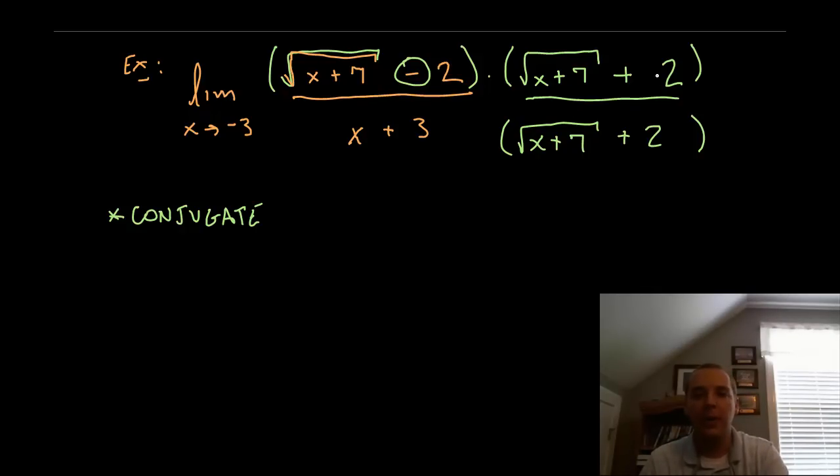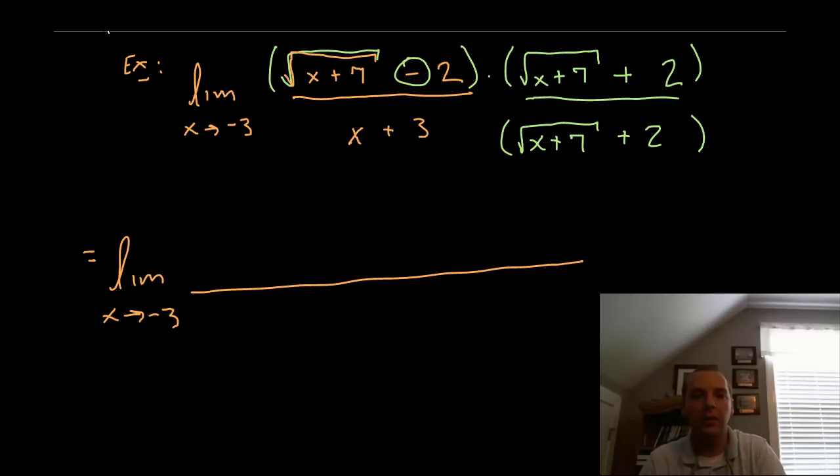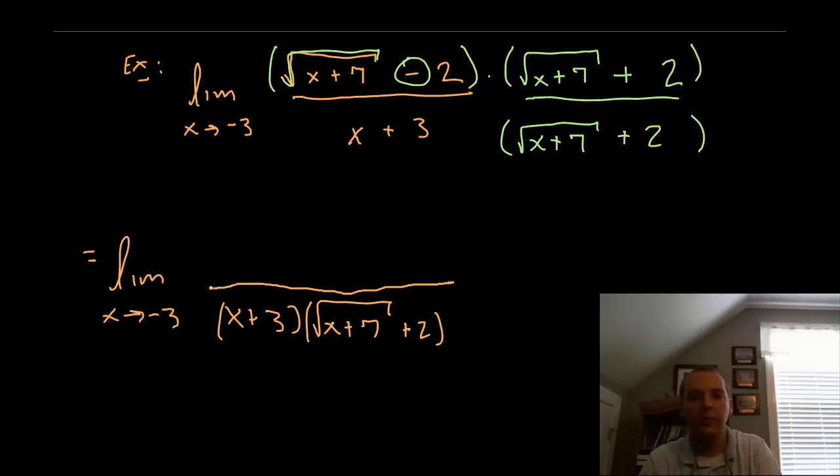It looks like this is going to get worse instead of better, but trust me it does get better. The limit as x approaches negative 3. The denominator, I will leave that in factored form, x plus 3 times the square root of x plus 7 plus 2. And the numerator I will actually foil that out. It looks like it's going to be bad, but it's really not.